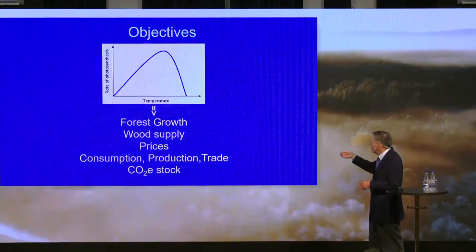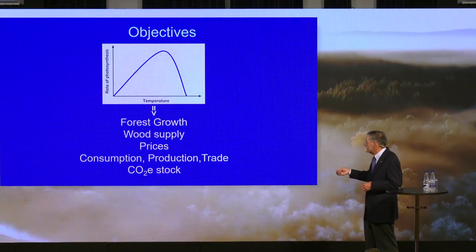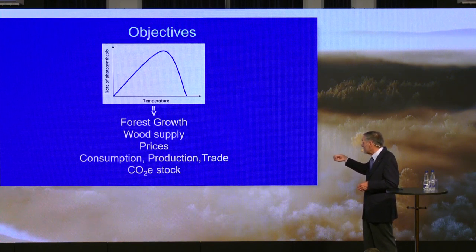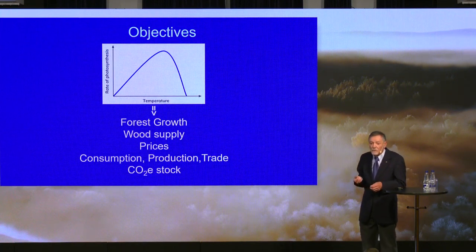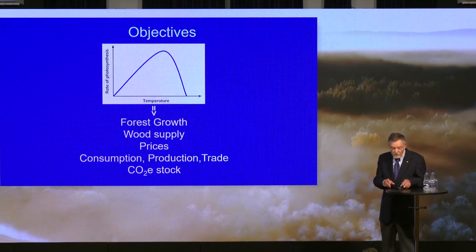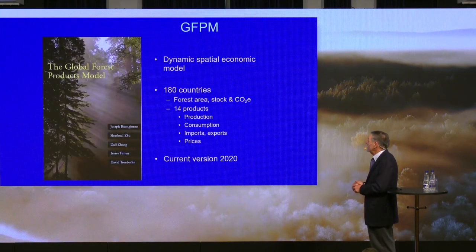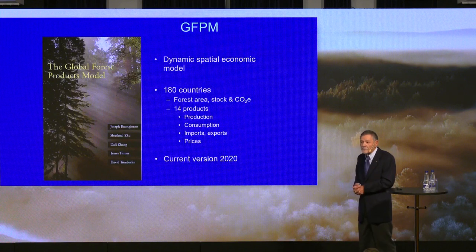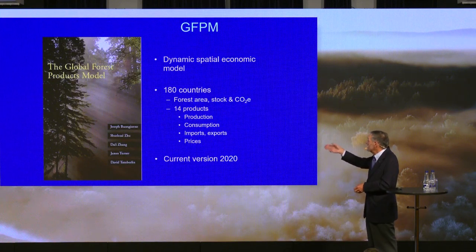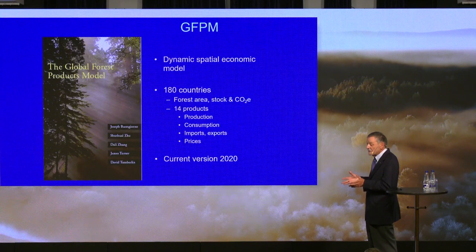I would like to show you some of the numbers I have obtained to show the effect of this change in temperature on the development in the forest sector, because change in photosynthesis is going to imply differences in the rate of growth of trees and all its consequences: consequence for wood supply, consequence for the price of wood and its derivatives, consequence for the consumption of products, their production, their international trade, and also consequences for the amount of CO2 that we store in trees in the forest. The methodology I used for this project is the Global Forest Product Model, GFPM in short.